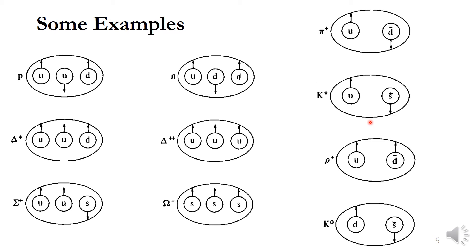The baryon number of K+ is again 0. Rho+ is the resonance particle of pi+; the quarks are the same (U and D-bar), but both have spin upward, so the net spin becomes +1/2 + 1/2 = +1. The charge is again +1 and the strangeness is 0.